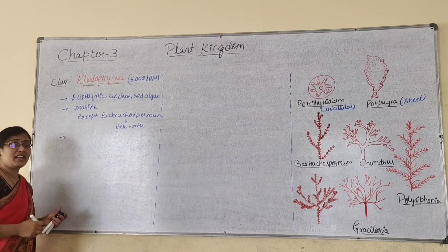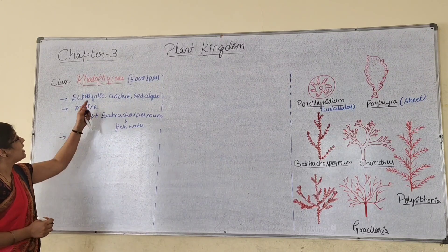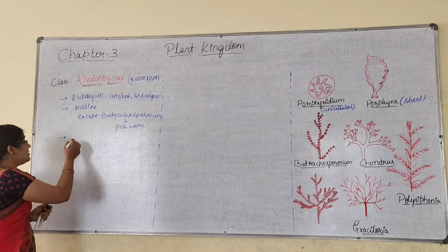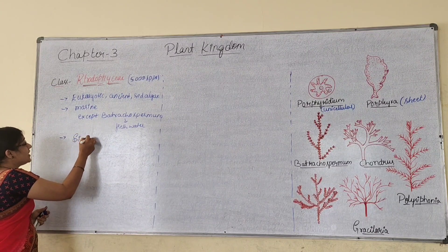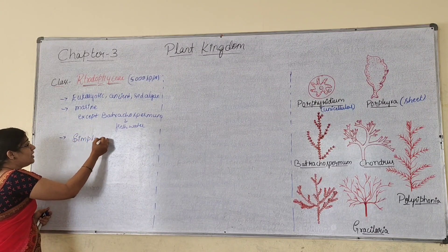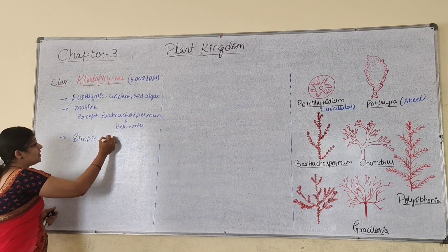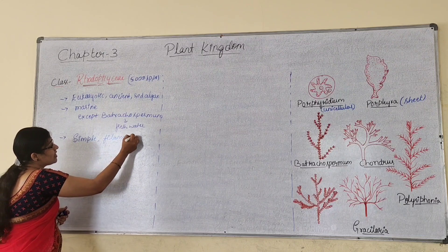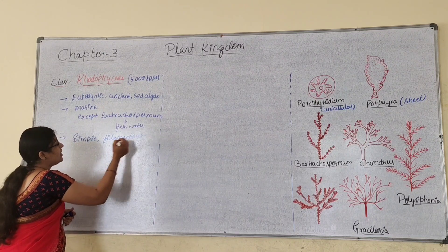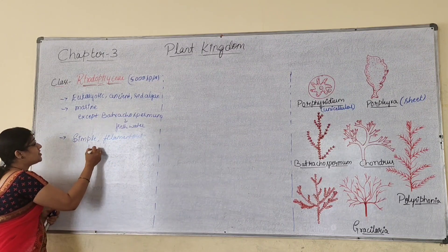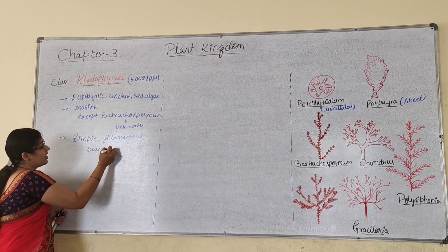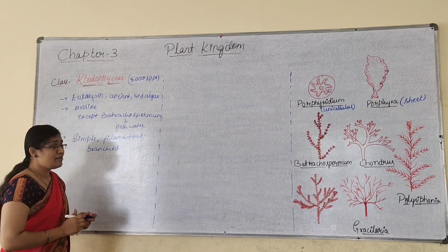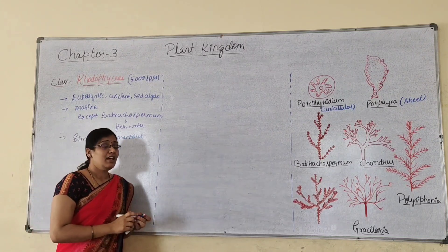The body organization in case of rhodophyceae is simple. The algae are simple, filamentous, and branched.